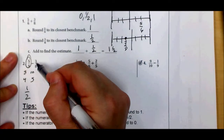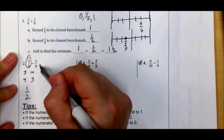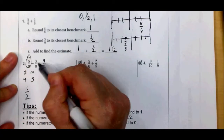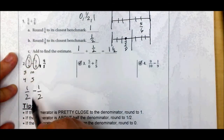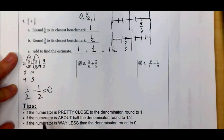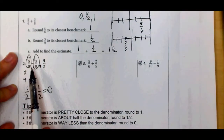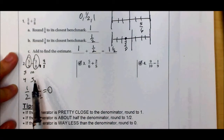Now three-eighths — eight is an even number so it's easy: half of eight is four, so one-half would be four-eighths. Three-eighths and four-eighths are really close, so three-eighths is also about one-half. So one-half minus one-half is zero. If you found the real answer it would be very small — not exactly zero, but small enough to round to zero.